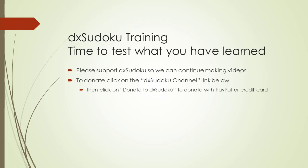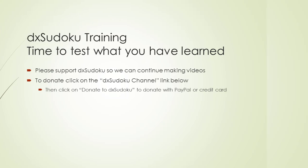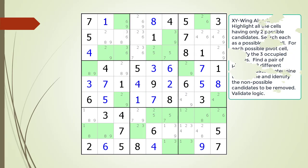Time to test what you have learned. Before we begin, please take some time to support DX Sudoku. Thank you for your support. Pause the video and find the XY-Wing pattern. Identify the pivot cell, the two pincer cells, the kill zones, and the non-possible candidates to be removed.